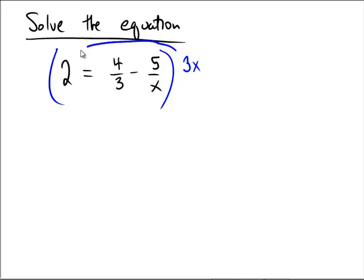What does it do for me? Notice that 2 times 3x is 6x. 3x times 4/3 would have the threes cancel out, so you would be left with 4x. And 3x times 5 over x would have the x's cancel out, and so you'd be left with 5 times 3, which is 15. Notice that now it's an equation that doesn't have any fractions in it, and so the calculation should be much easier.